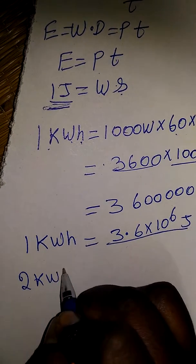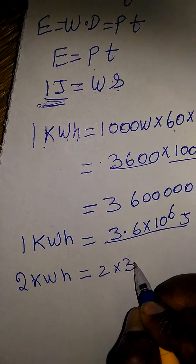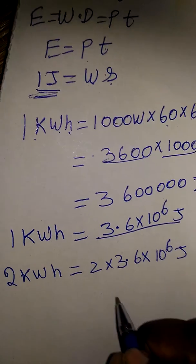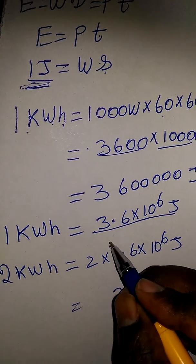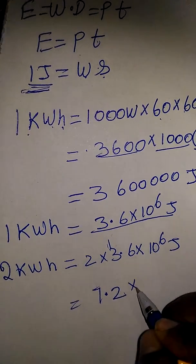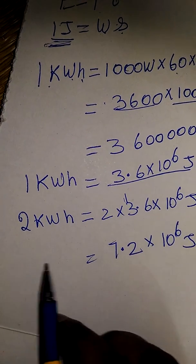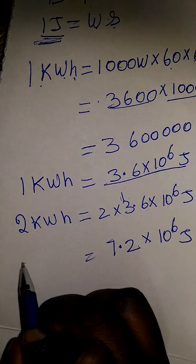So 2 kWh is also 2 times of 3.6 into 10 power 6 joules. That means it's 7.2 into 10 power 6 joules. Like that, we can solve for kWh problems.